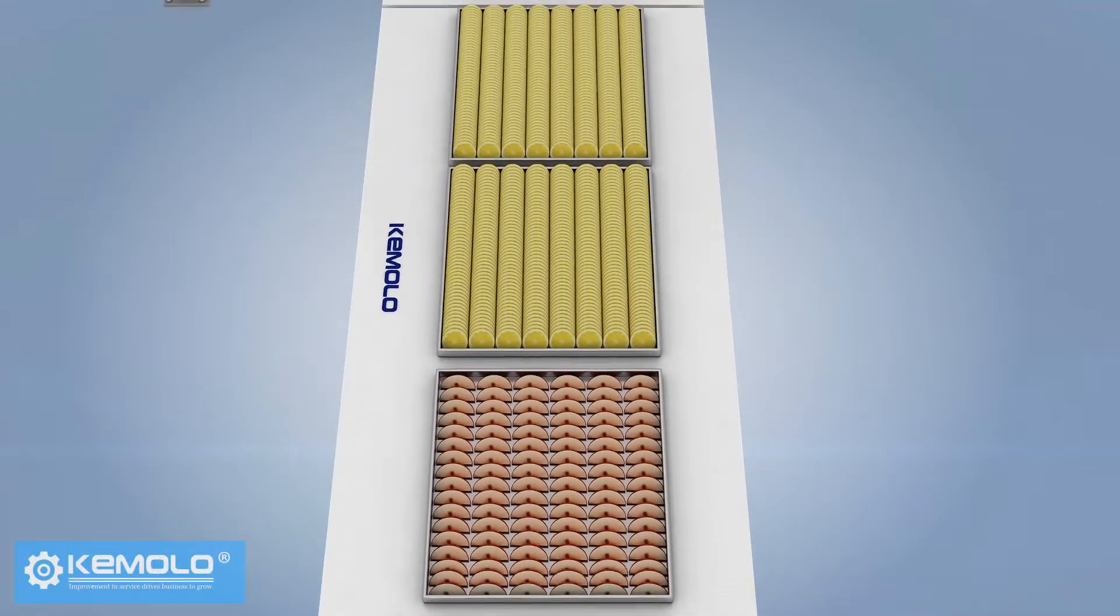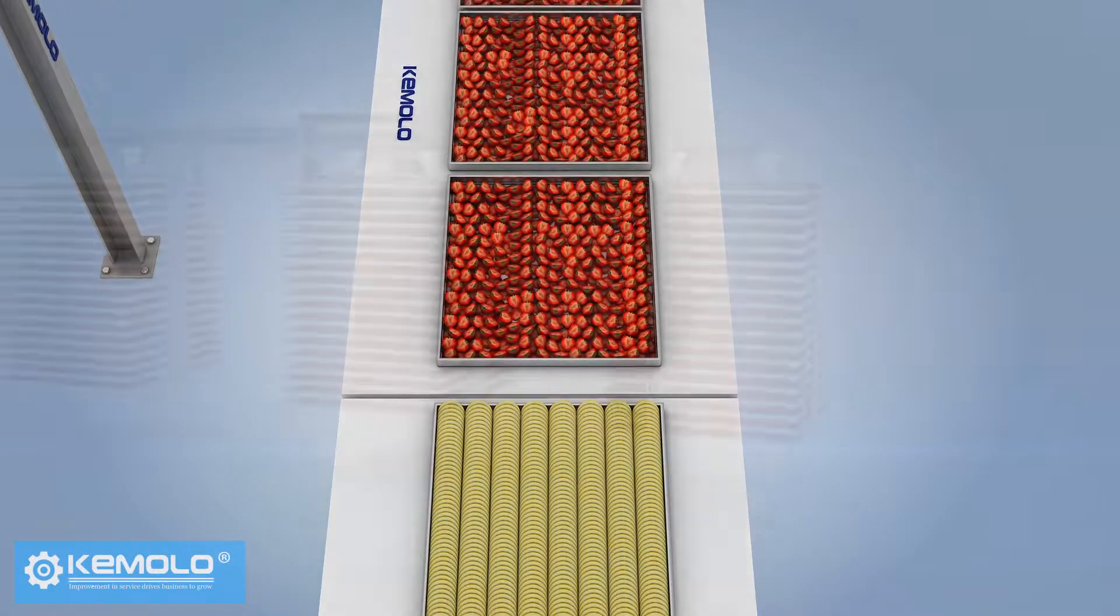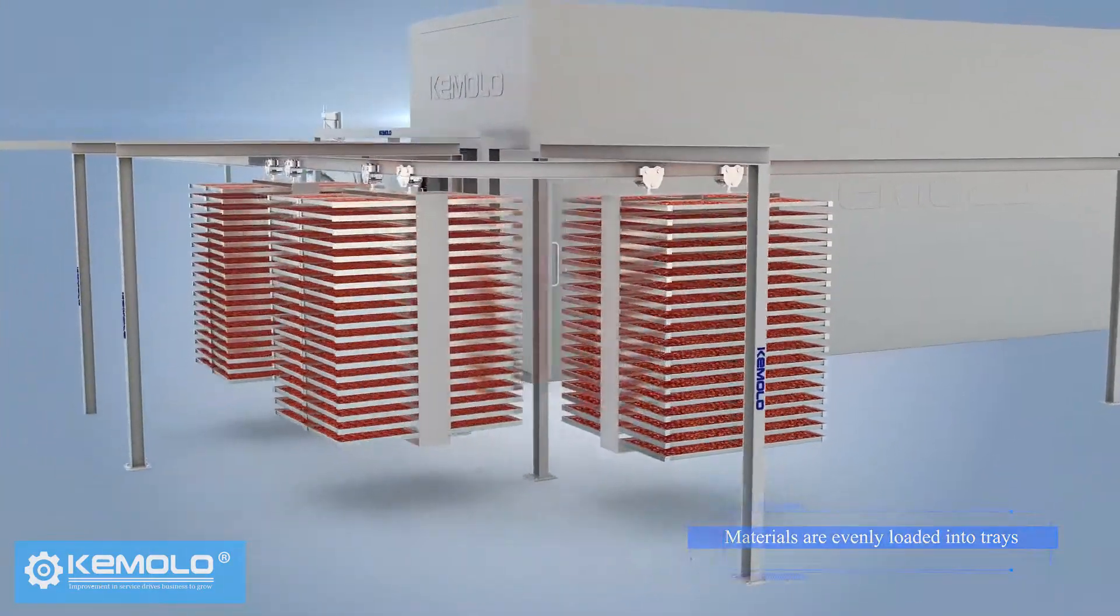First, wash and slice the fruits, vegetables or other pre-processed materials evenly and load them into product trays.